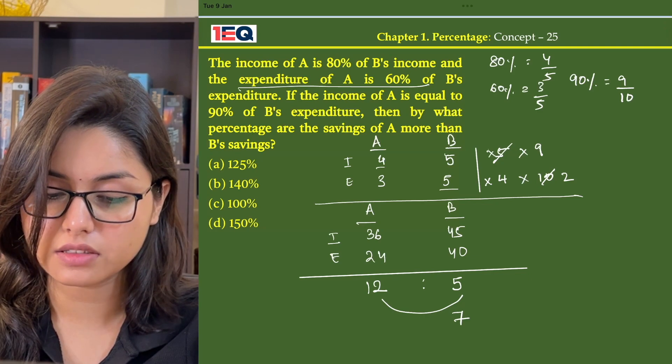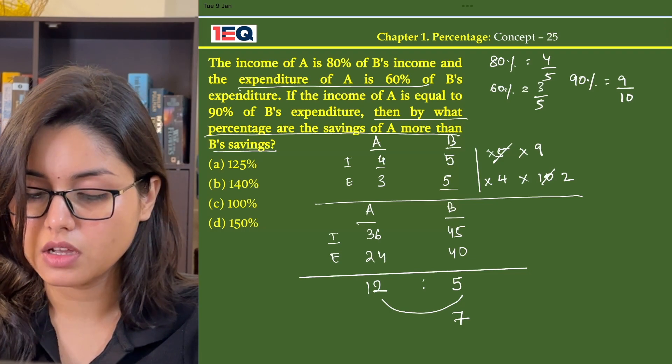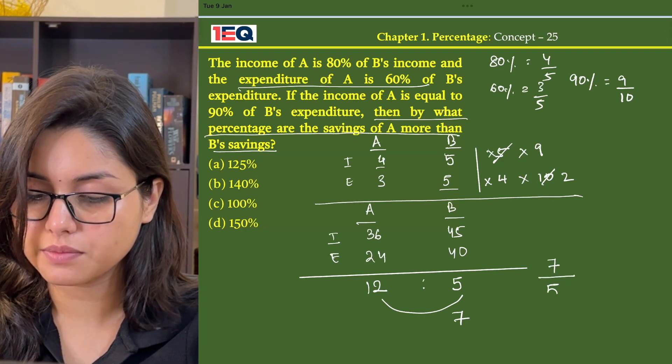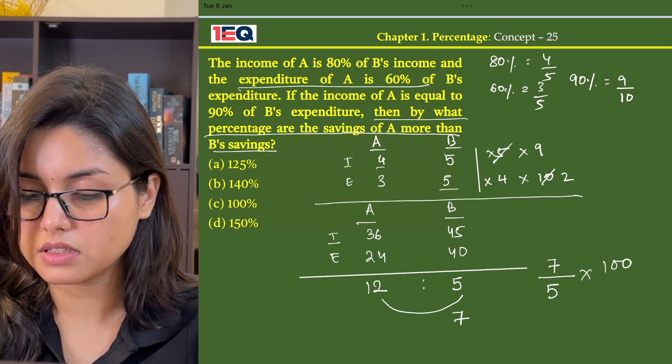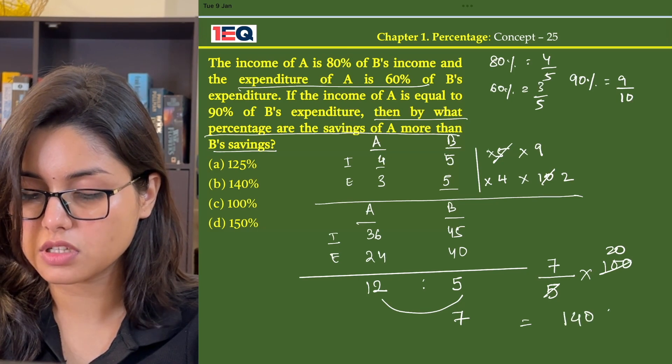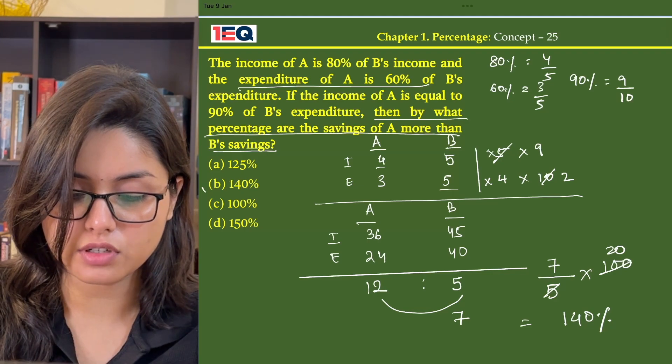We are asked by what percentage the savings of A are more than that of B. So A saved 7 more than B, into 100%. 5 times 20 is 100, 7 times 20 is 140. So the answer is option B, 140%.